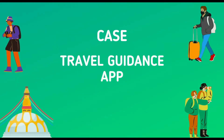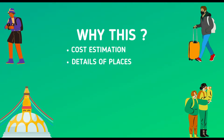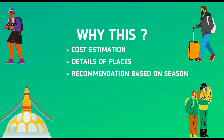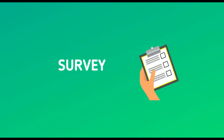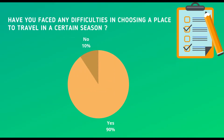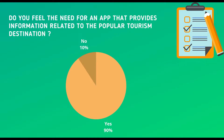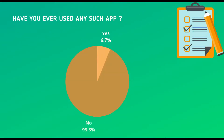The case we have chosen is to develop a travel guidance app. The reasons are providing cost estimation of travel, an app for information of places, and recommending places based on the ongoing season. For gathering more information, we did a survey among 30 undergraduate students from different universities. The results strongly supported our case, as most of them faced difficulties in choosing a place in certain seasons and collecting information for their travel, hence they feel the need of a travel guidance app, and few have previously used any such app.